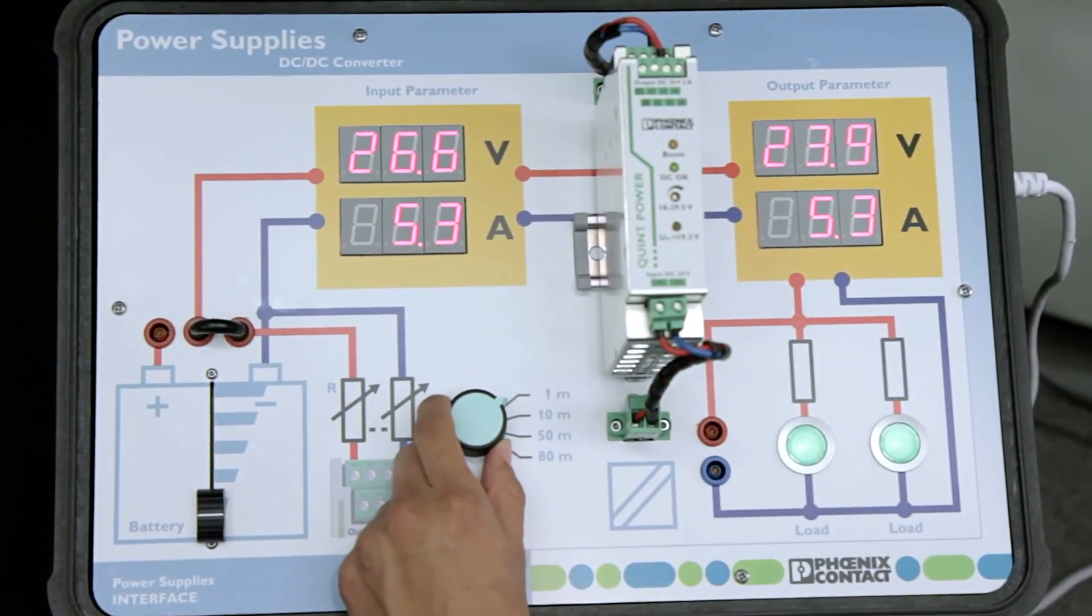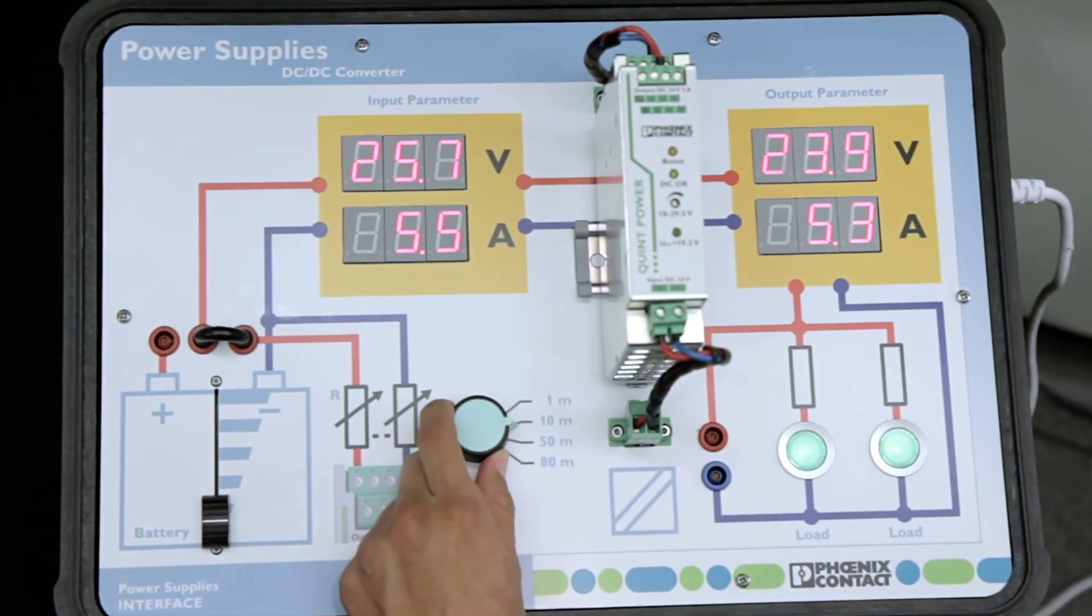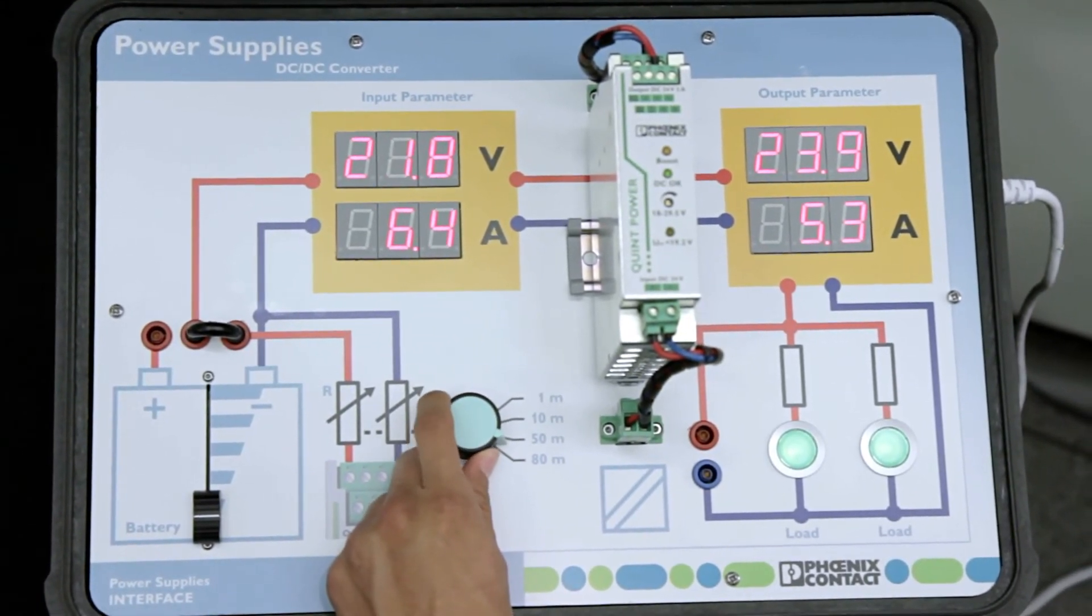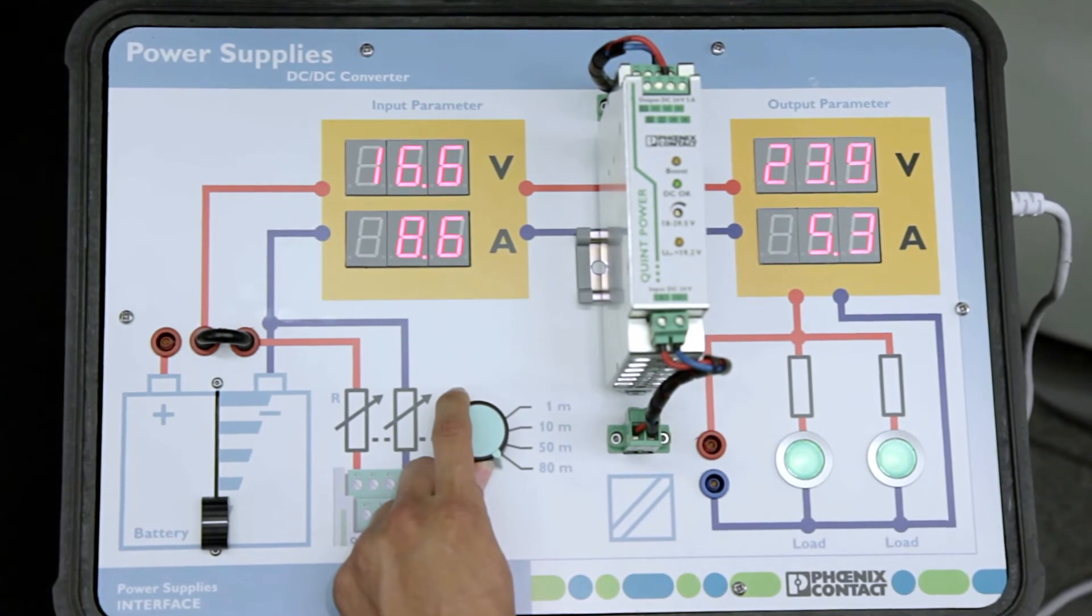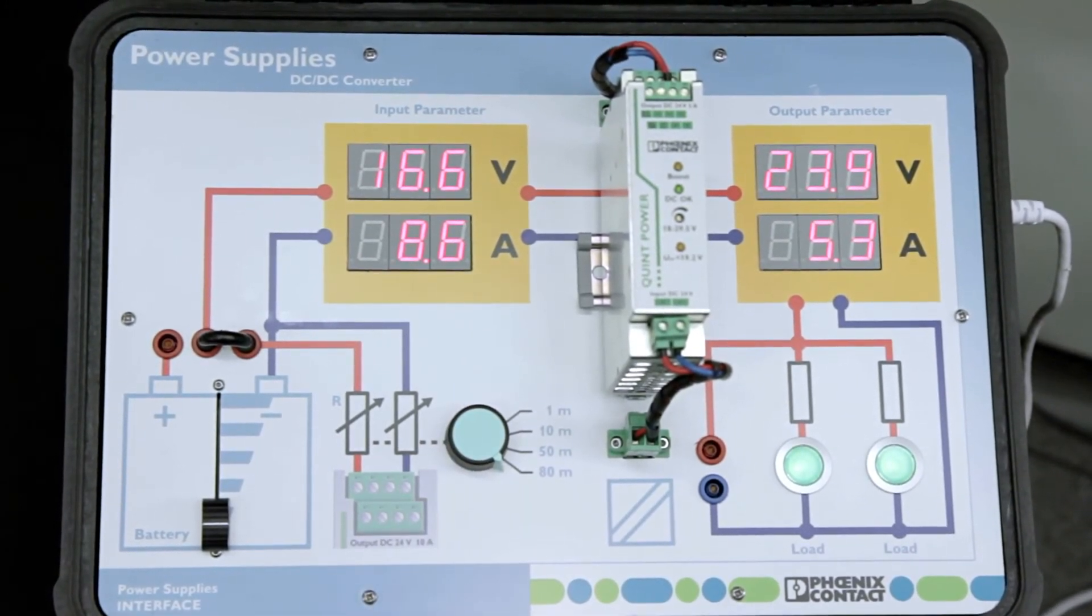We increase the distance between our power supply and our device using this dial. Therefore, there is a voltage drop across the line. Without the DC to DC converter to amplify the input voltage, your end device will shut down.